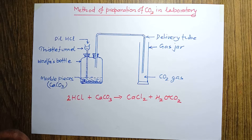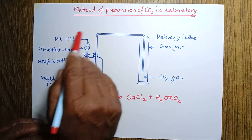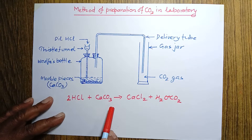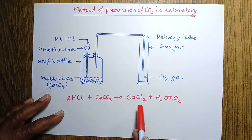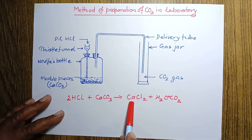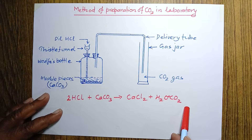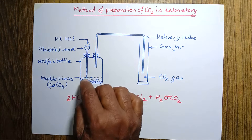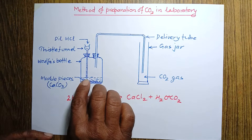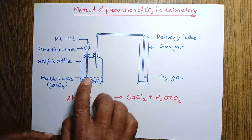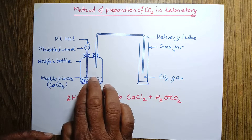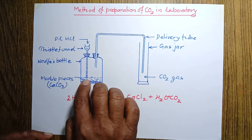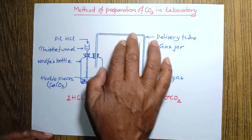In the laboratory, carbon dioxide gas is prepared by reacting dilute hydrochloric acid with marble pieces. Marble pieces are calcium carbonate. In this reaction a salt and water are also produced along with carbon dioxide. One key point we have to remember: the tip of the thistle funnel should be inside the dilute hydrochloric acid.